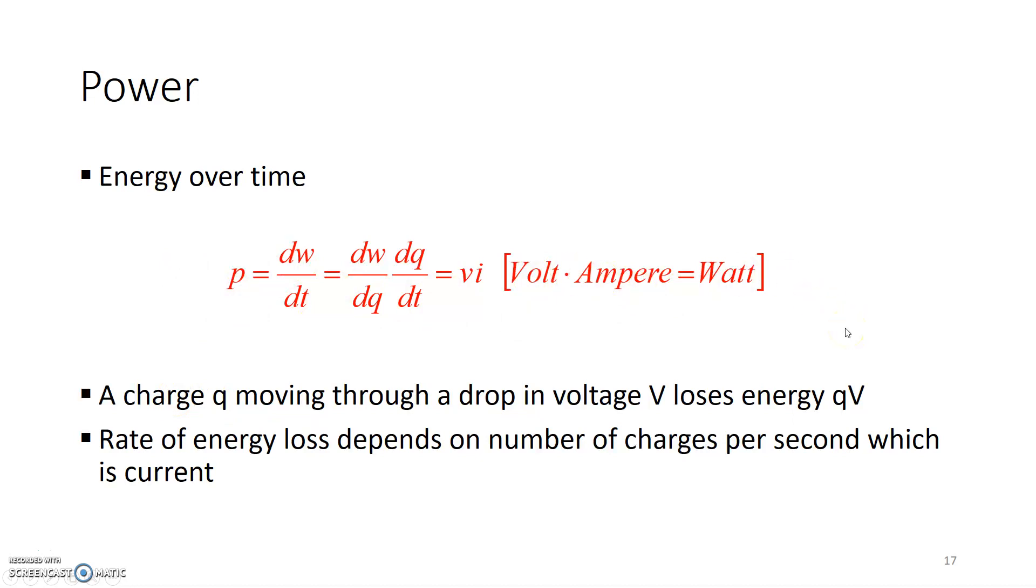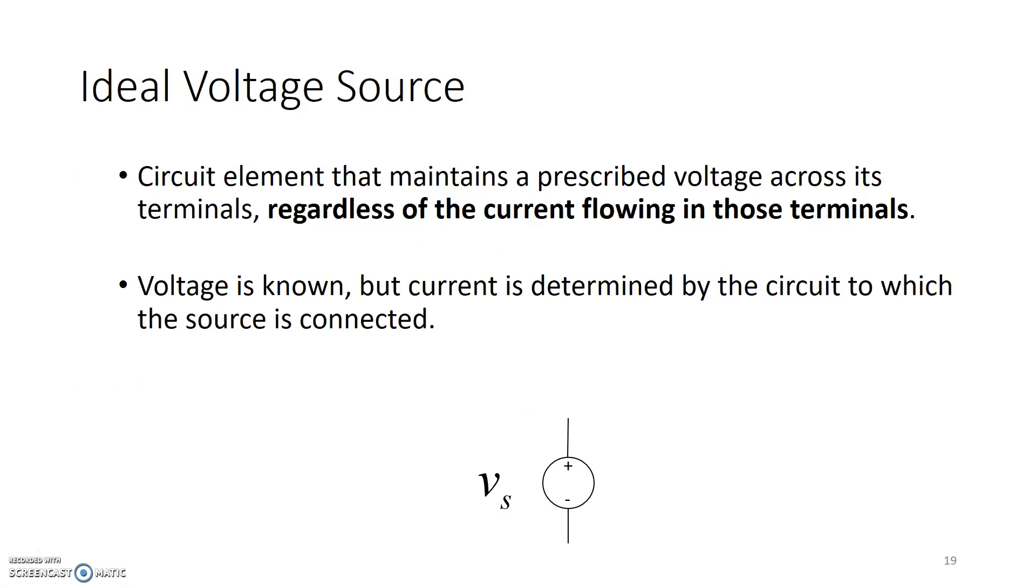Now, in an electrical circuit, there are certain sources that provide voltage or current. Those sources are called ideal voltage sources. Circuit elements that maintain a fixed voltage across its terminals, regardless of the amount of current flowing in those terminals, so it's known as an ideal voltage source. An example of a voltage source is a battery.